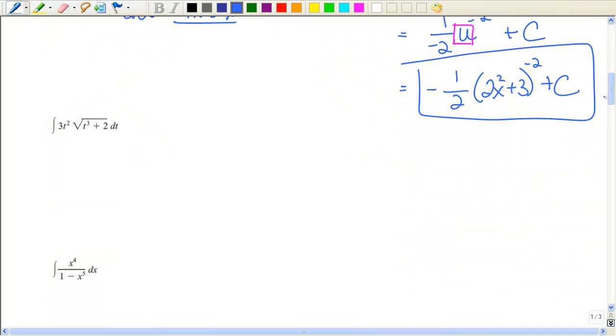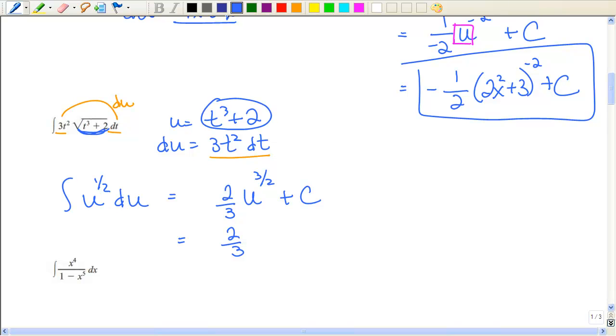This next one, we have a square root. Obviously, that's the more complicated part. So I'm going to let u be what's underneath the square root. Take the derivative and then let's see what we've got. If you notice, 3t² dt is du. So all of this is du. Inside here, that's u. The square root is the half power. And voila, you can use that power rule again. So add 1 to the exponent, multiply by the reciprocal of that new exponent, and then replace u with that function of the original variable, which in this case is t.